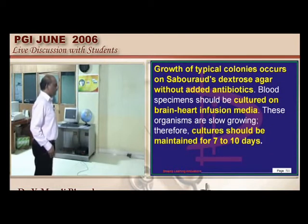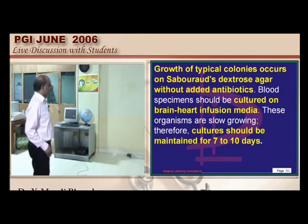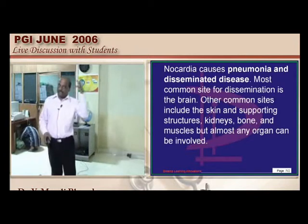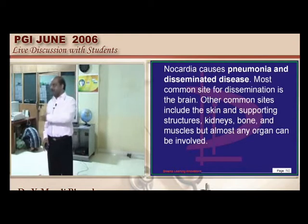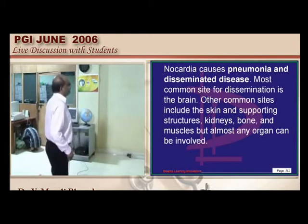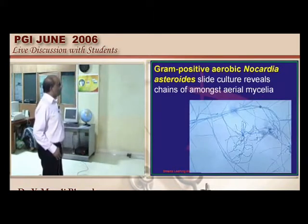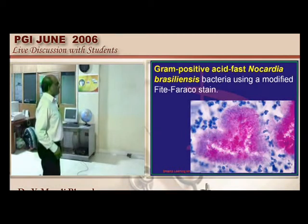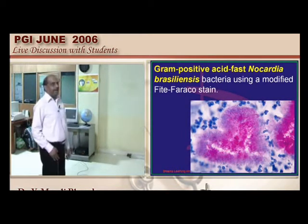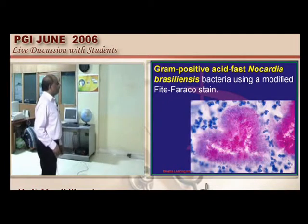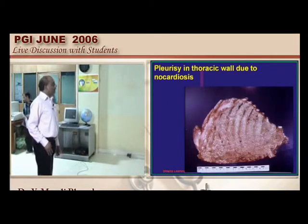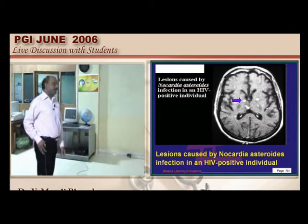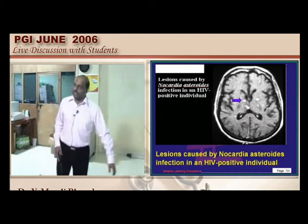Nocardia is cultured on Sabouraud's dextrose agar and brain-heart infusion agar. It can cause pneumonia, lung abscess, and disseminated disease involving the brain. Nocardia asteroides presents with beaded appearance and is a gram-positive aerobe. It can form thick exudates with pleurisy involving the thoracic wall and can disseminate to the brain in immunocompromised individuals.